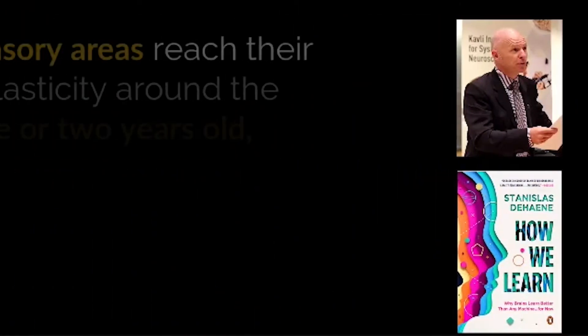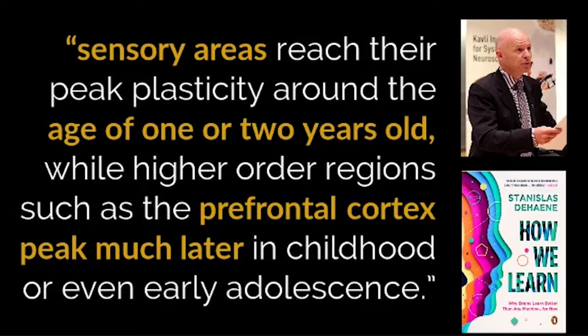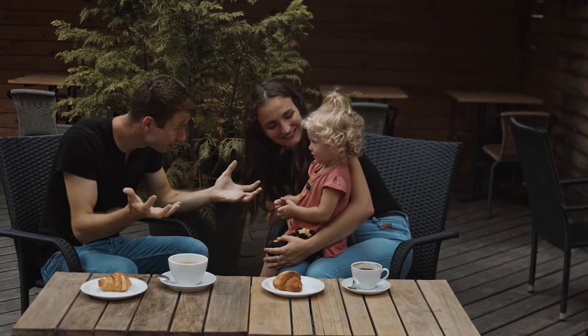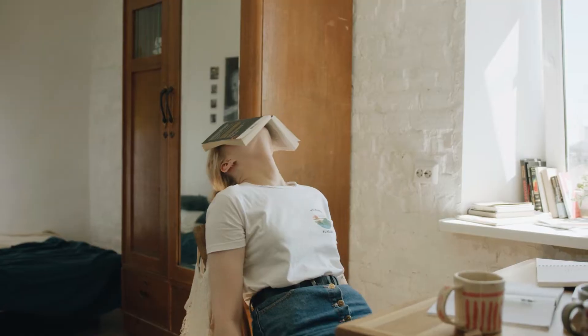As Stanislas Dehaene notes, "sensory areas reach their peak plasticity around the age of one or two years old, while higher-order regions, such as the prefrontal cortex, peak much later in childhood or even early adolescence." Some amount of change is always possible — neuroplasticity is at work whenever you learn something new or develop a habit. It's just that the rate of change in a child's brain is orders of magnitude higher than in an adult's. This may not be surprising if you've ever been astounded by how quickly a child learns a new language compared to an adult.